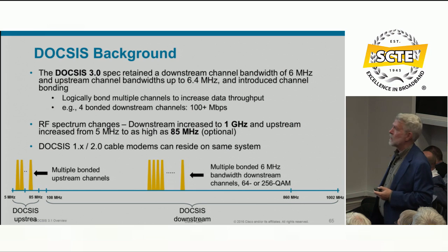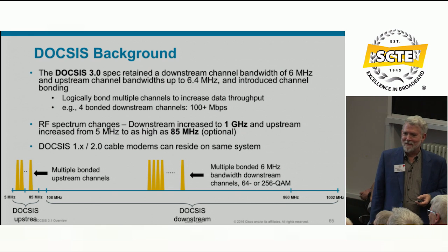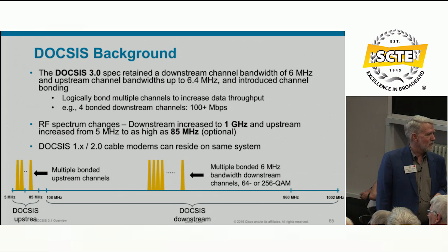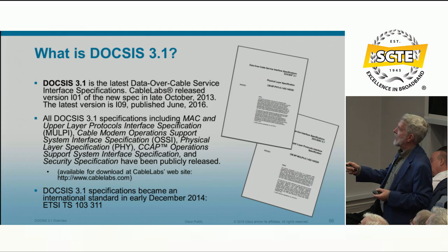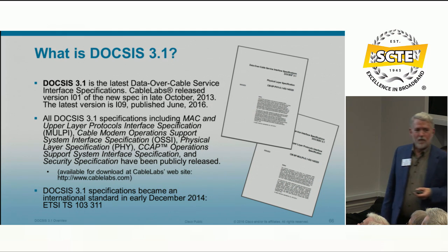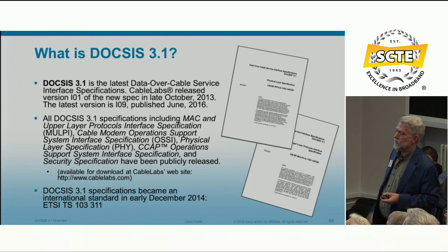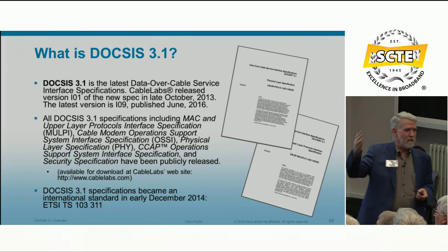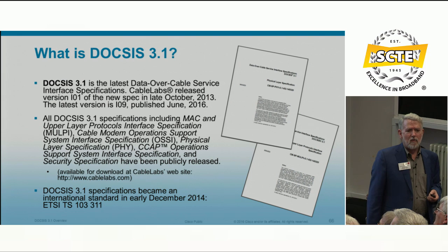But it's not enough. Competition has forced the cable industry to pursue even higher data speeds, and we do that with DOCSIS 3.1. The first version of this spec was released in October 2013. The latest version is I09, published in June of this year. There have been several upgrades — mostly editorial changes, a few technical clarifications. All DOCSIS 3.1 specs including MULPI, cable modem OSSI, PHY spec, and CCAP have been publicly released on the Cable Labs website at no charge.